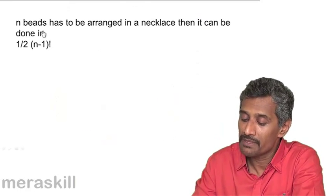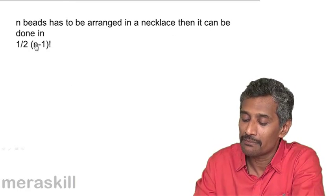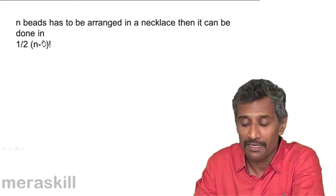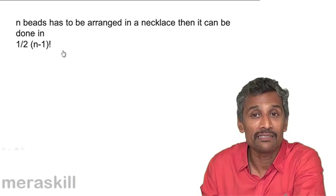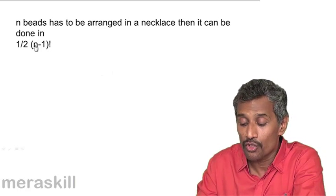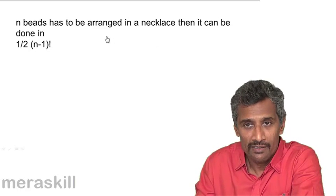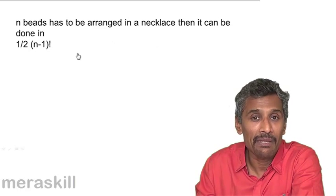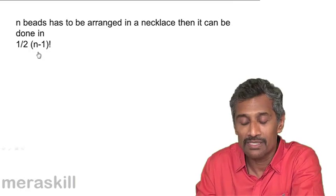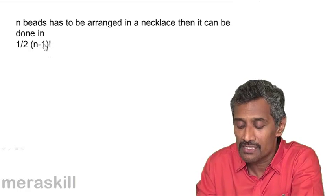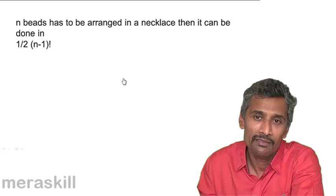For example, that means n beads have to be arranged in a necklace and it can be done in (n-1)!/2 because all the beads are identical. You could also compare it with how in a row wise arrangement, similar arrangements are divided by p!. So since there are two arrangements which are identical, it's (n-1)!/2.